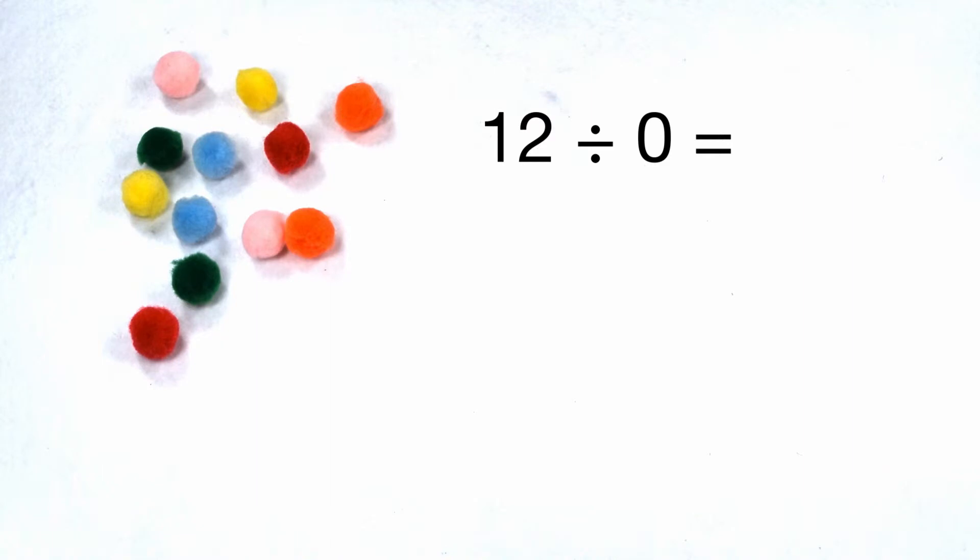Anytime I try to divide by zero, the result is impossible. It's going to come out to be an empty or null set because I don't actually have any groups to move my items to.